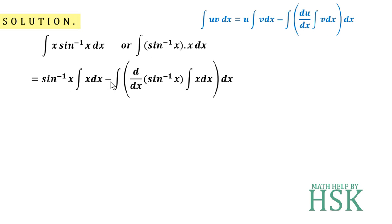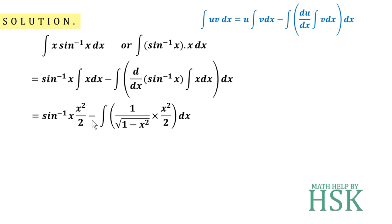Applying the formula of integration by parts, we get: sin⁻¹(x)·∫x dx − ∫[d/dx(sin⁻¹x)·∫x dx] dx. The integration of x is x²/2, and the differentiation of sin⁻¹(x) is 1/√(1−x²). So we have sin⁻¹(x)·(x²/2) minus the integral of (1/√(1−x²))·(x²/2).